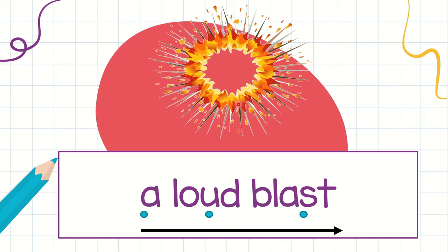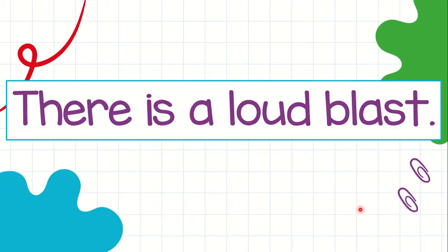A loud blast. When reading we need to start from the left going to the right. Remember that. Now let's put this in a sentence. There is a loud blast. Again, there is a loud blast. There is a loud blast. Next one.